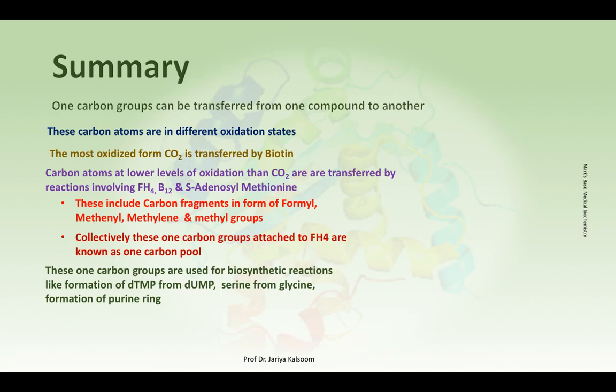The one-carbon pool is derived mainly from amino acids. However, since serine can be synthesized from 3-phosphoglycerate, a glycolysis intermediate, carbohydrates can also contribute to the one-carbon pool. Since choline is mainly derived from phospholipids, these also contribute indirectly to the one-carbon pool.